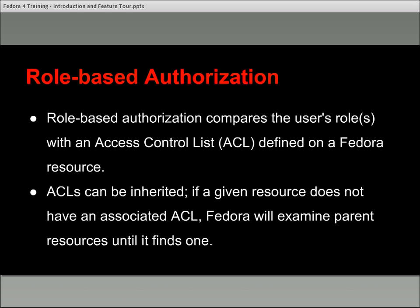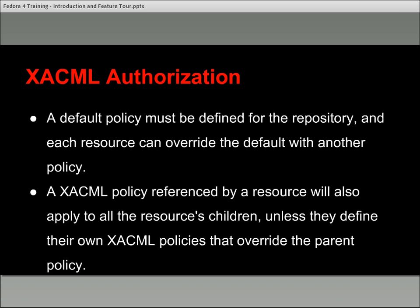XACML — many of you are probably familiar with it, as it's implemented quite commonly in Fedora 3 — also exists in Fedora 4. You define a default XACML policy for the repository as a fallback if no override policy is found, but each resource can override that default policy with its own. It's set up to use the tree structure, so if a policy is set on a particular resource, all of its children will inherit that policy unless they also override it. XACML 2.0 is the particular implementation.